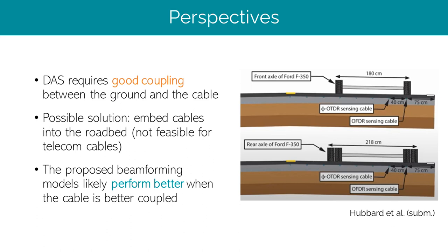A strong requirement for traffic applications is that the DAS cable be properly coupled with the ground in order to measure the deformation induced by cars. In our study, the cable was not very strongly coupled, so the car signals exhibit relatively poor signal-to-noise ratio, especially in the traffic direction farthest from the cable. To address this, one could consider embedding fibers directly into the roadbed, as shown in an experiment by Peter Hubbard and co-workers, though this is not feasible with commercial telecom cables that need to be accessible for maintenance. Nonetheless, the beamforming methods proposed would benefit from clearer car signals, and it would pay off to identify cable sections with good coupling, such as trenched segments.